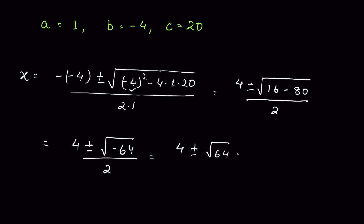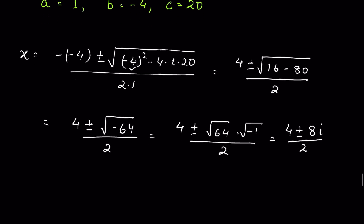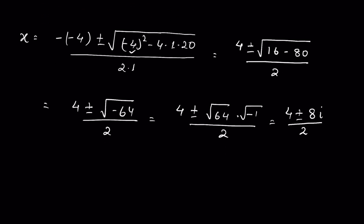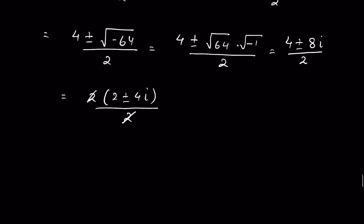We can write this as 4 plus or minus the square root of 64 times the square root of minus 1, upon 2. The square root of minus 1 is i (iota), so this equals 4 plus or minus 8i upon 2. Taking 2 as common: 2(2 plus or minus 4i) upon 2, which cancels to give two values for x: 2 plus 4i and 2 minus 4i.